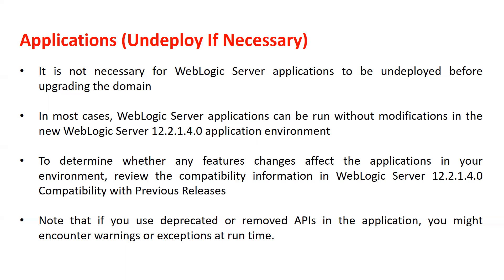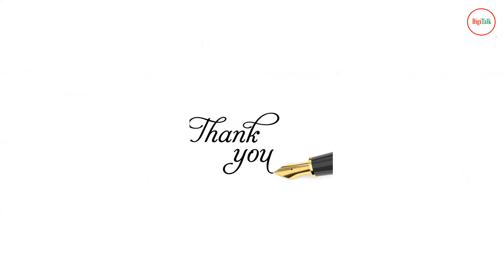The development team should check all features deprecated or removed in 12.2.1.4 to ensure applications are not using those features. If deprecated or removed APIs are used, you might encounter warnings or exceptions at runtime. As a best practice, share the 12.2.1.4 release document with the development team and ask them to review it thoroughly. This is all about the upgrade paths for WebLogic Server. Part two will demonstrate the actual upgrade from 10.3.6 to 12.2.1.4. Thanks for watching and stay tuned.